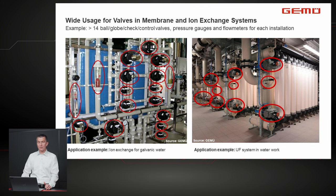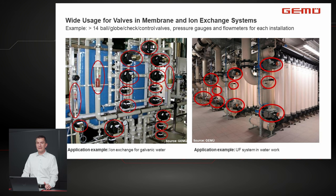Looking at real installations: on the left, an ion exchanger shows many different diaphragm valves plus flow meters for controlling feed and regenerating chemicals. On the right, an ultrafiltration plant uses butterfly valves for larger diameters, with pressure gauges and flow meters for control. In total, there are typically up to 14 different valves or sensors installed in each rack.